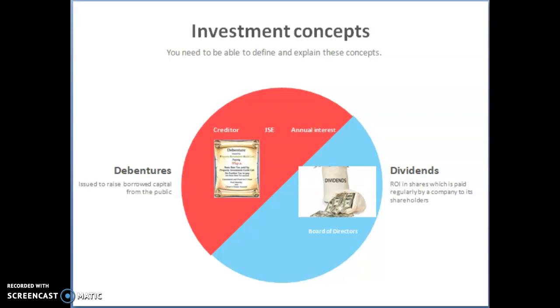If we look at debentures first, it is issued to raise borrowed capital from the public. The lender or debenture holder agrees to lend money to the company on certain conditions for a certain period of time. The debenture holder is like a creditor, as the company is liable to repay them at a certain given time.